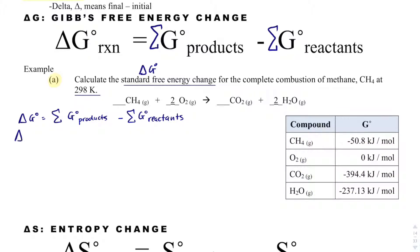So delta G, and I'm going to write out the formula before I get the numbers, is going to be products minus reactants. So that means I'm going to have the G of CO2 plus 2 times the G of H2O. So I'm going to subtract that from the G of CH4, which is methane, plus 2 times the G of O2.